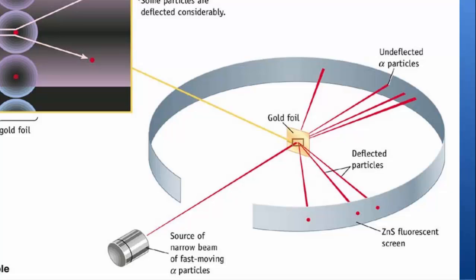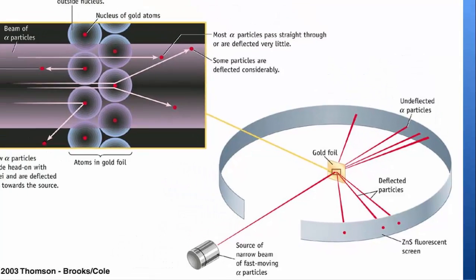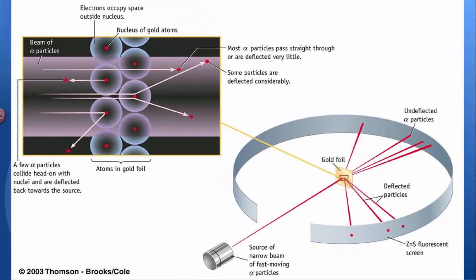Well, the fact that alpha particles, which are made of just protons and neutrons, they're positively charged, the fact that they were bouncing off, occasionally bouncing off the gold foil, led to these deductions that he made.